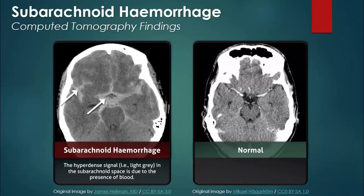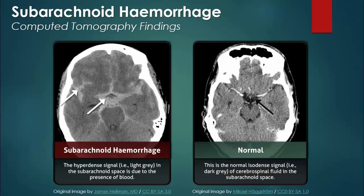Now let's compare it with the normal CT scan on the right. The black arrow in this CT scan also points to the location in the subarachnoid space, but in this patient the signal is isodense, dark gray, which is the normal shade of cerebral spinal fluid on a CT scan.